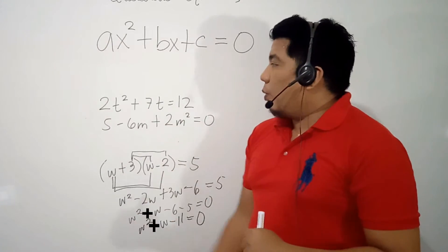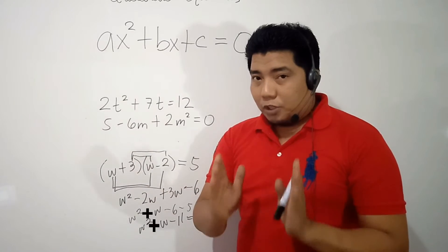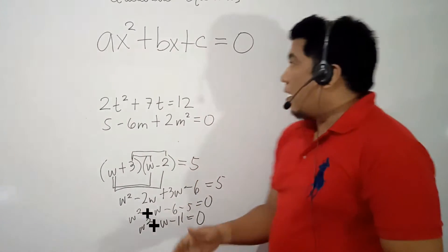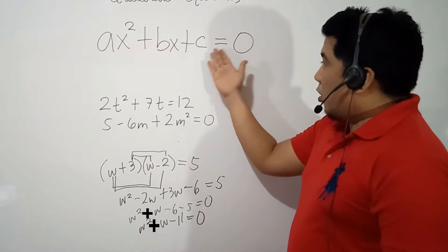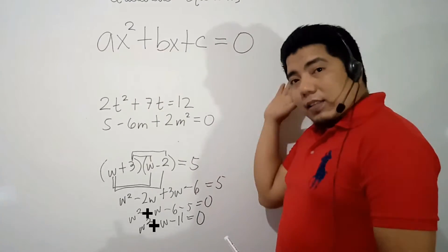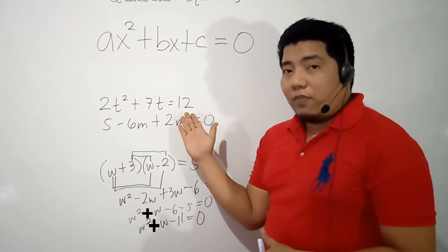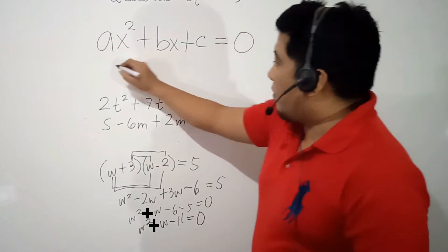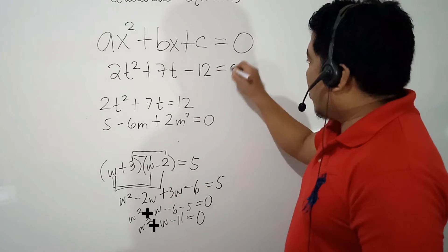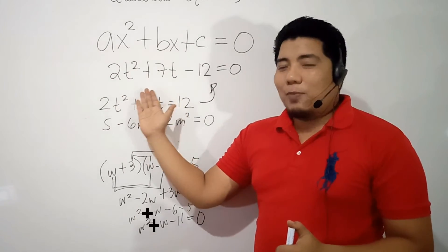Let's check our first example: 2t squared plus 7t is equal to 12. The quadratic term is already in the first position, and 7t the linear term is already in the middle. However, our standard form requires the right side to equal 0. So we transpose 12 to the left side, giving us 2t squared plus 7t minus 12 is equal to 0 — this is now in standard form.